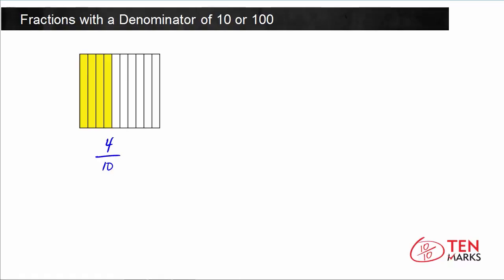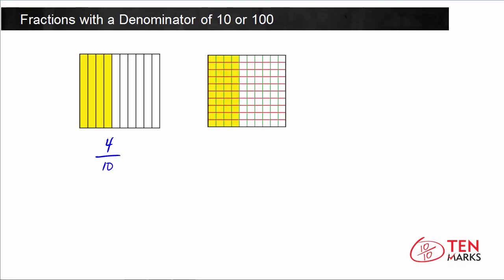Now, let's take a look at 4 tenths represented in a hundredths grid. Here's a hundredths grid, and it's the same size of the whole that we have in the tenths grid, and this just has 100 divisions instead of 10 divisions.